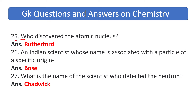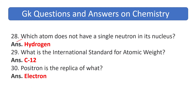Who discovered the atomic nucleus? The answer is Rutherford. An Indian scientist whose name is associated with a particle of a specific origin — the answer is Bose. What is the name of the scientist who detected the neutron? The answer is Chadwick. Which atom does not have a single neutron in its nucleus? The answer is hydrogen.